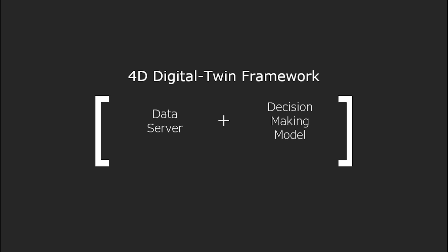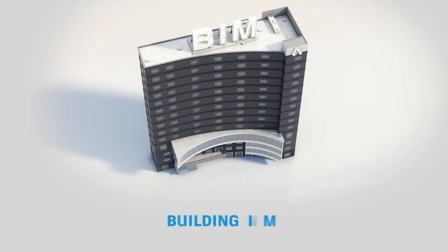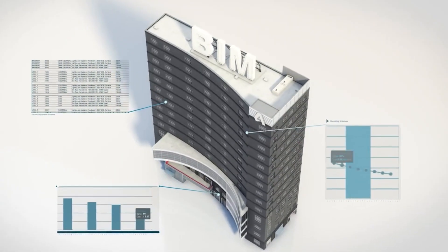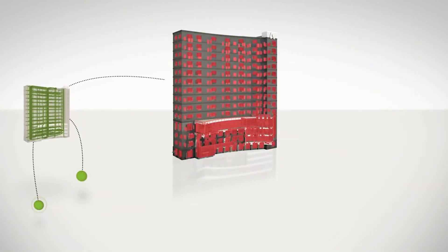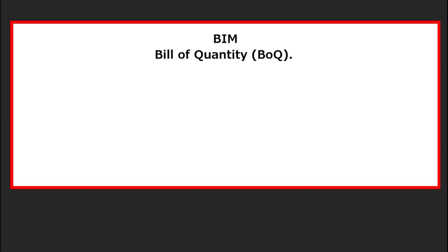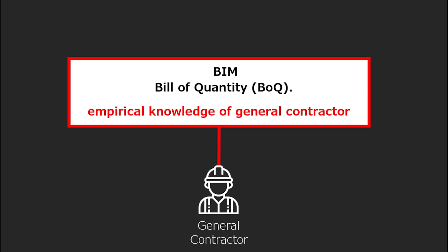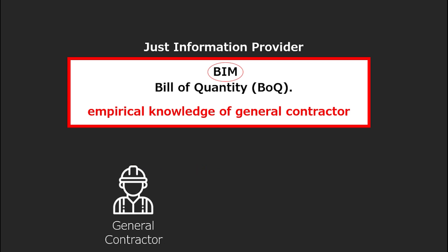We adopt BIM as the data server and the queuing model as the decision-making system. BIM can provide a wide variety of information and has been used to support decision making in limited areas. According to the LOD of the BIM models, it is possible to calculate information about the planned work. However, BIM cannot provide all detailed information on materials, labor costs, and expenses for all work included in the BOQ, nor information related to human resources at the micro level. No matter how valuable BIM is and how much information it contains, it is only reference information to support good decision making. Therefore, increasing the value of the BIM framework is essential.